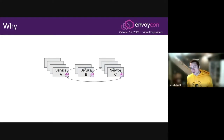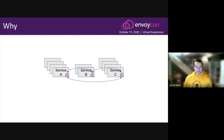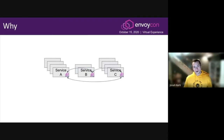Another situation where this might be useful is if you have Envoy deployed in a service mesh where Envoy is handling the intra-service communication within your backend infrastructure. This isn't the first architecture we're considering when designing the cache filter, but especially with an in-memory cache, it could be useful to cache the content that one service is requesting from another to reduce the traffic passing between the services.